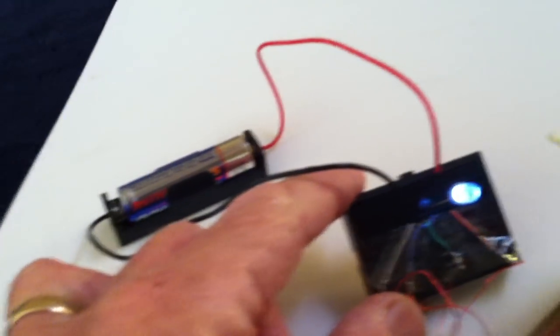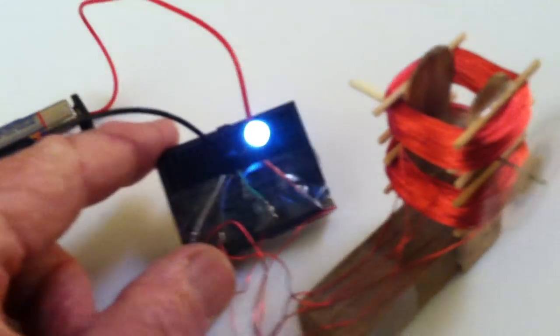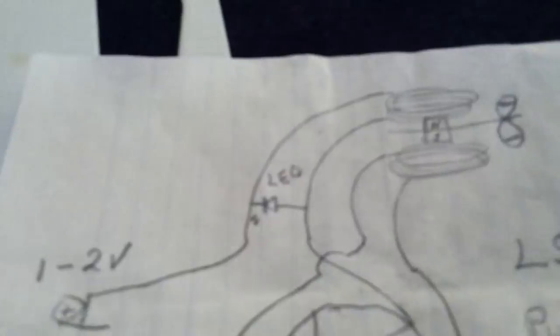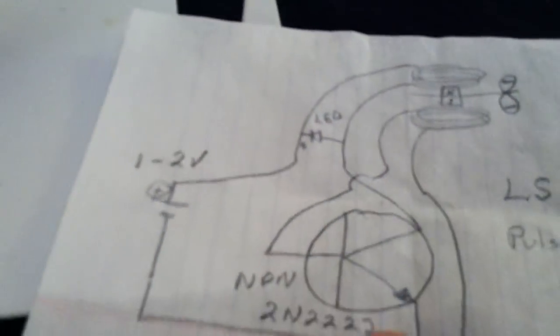You notice it's a 1.5 volt battery, lighting up a 2 volt LED. And it does that because it's capturing the flyback. As this magnetic field collapses, it shoots backwards in the flyback mode and lights the LED.